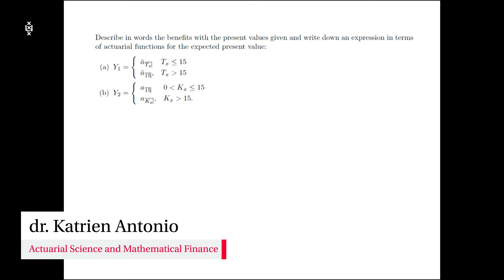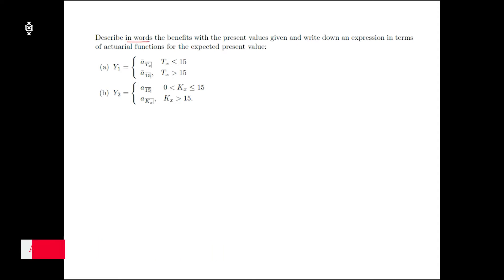In this exercise, we are asked to describe in our own words what the benefits are, which are indicated by the present value random variables given in part A and part B of the exercise. These are random variables referring to the present value of a specific stream of cash flows, and we need to describe what this cash flow stream is in our own words. Next to that, we are also asked to write down an expression in terms of actuarial functions — using international actuarial notation — for the expected present value.